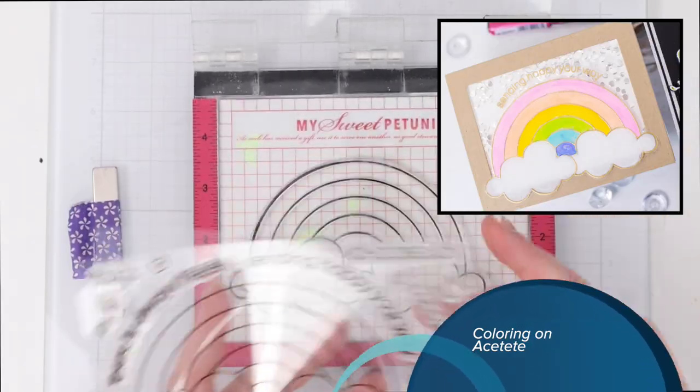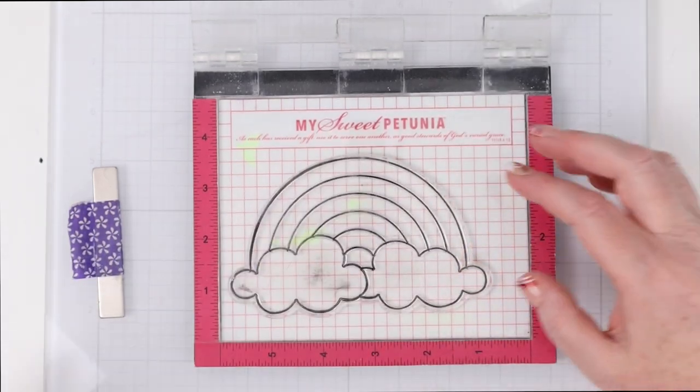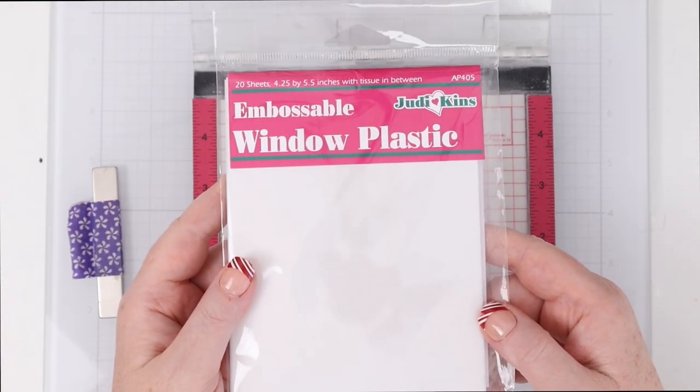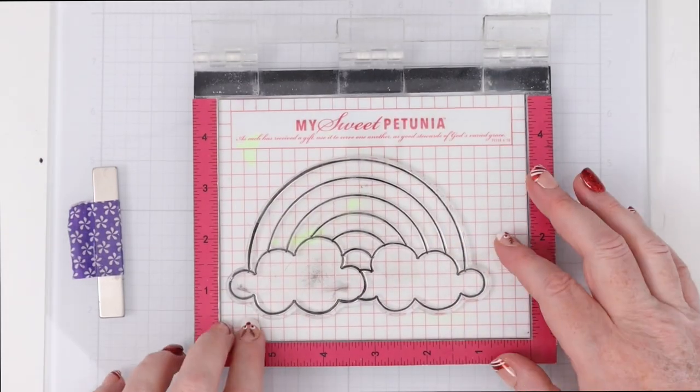For the second card we're going to color with the markers on acetate so I'm using the Judikins embossable acetate these plastic sheets and these are great because you can actually heat emboss on them you just have to be careful not to hold the heat too long on there.